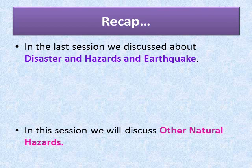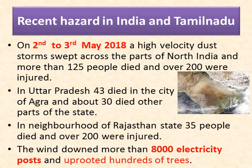In this session we will discuss about other natural hazards, and learn about recent hazards in India and Tamil Nadu. On the second to third of May 2018, a high-velocity dust storm swept across parts of North India. More than 125 people died and over 200 were injured. In Uttar Pradesh, 43 died in the city of Agra and about 30 died in other parts of the state.